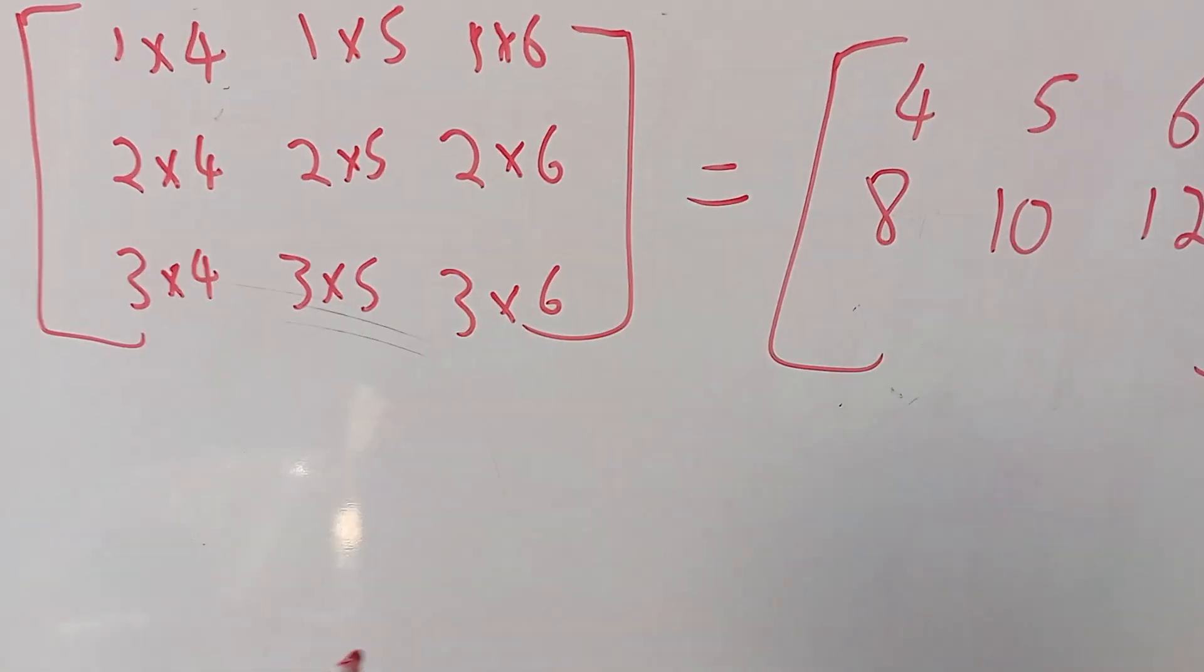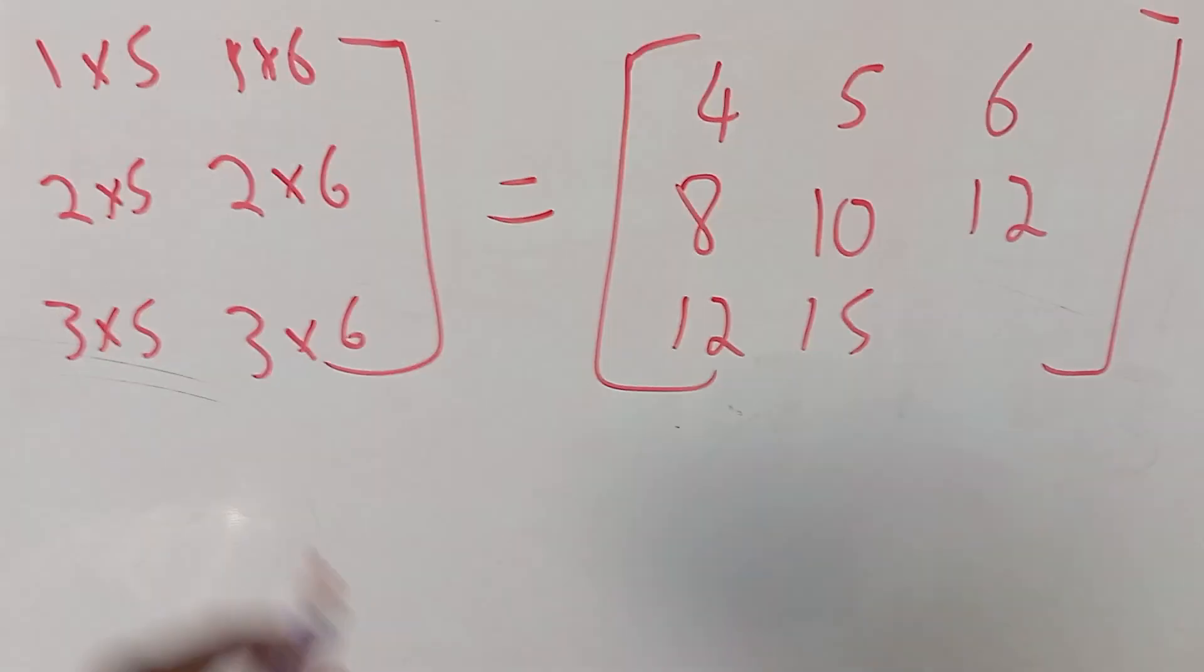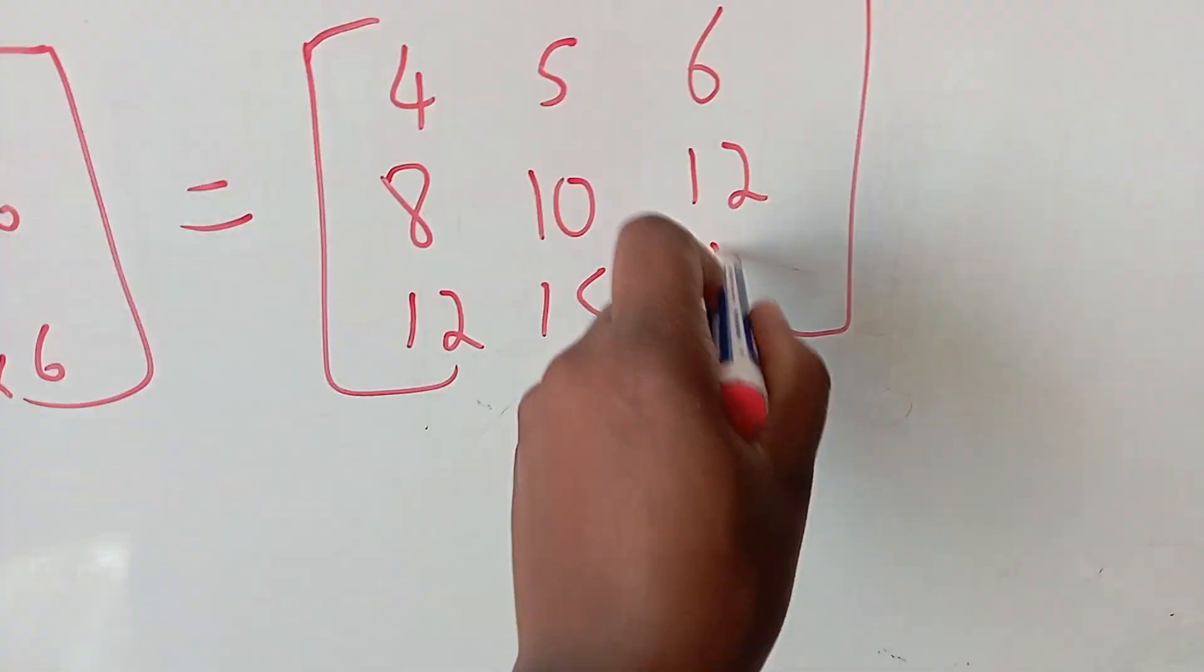Then we have 3 times 4, which is 12, 3 times 5, which is 15, and 3 times 6, which is 18.